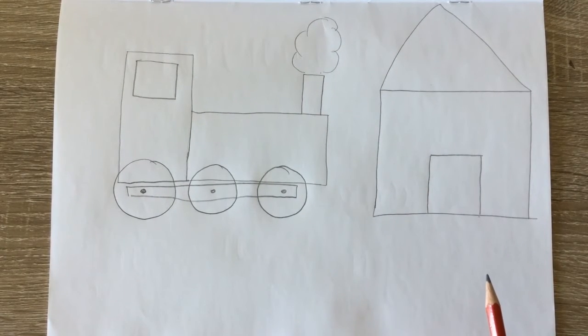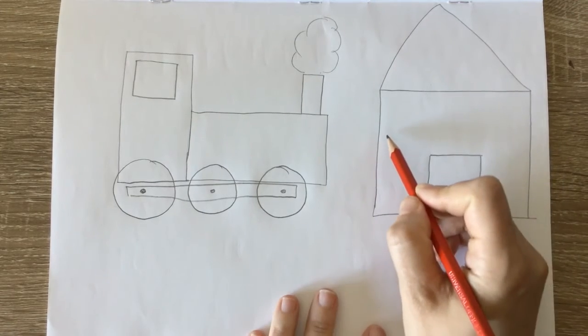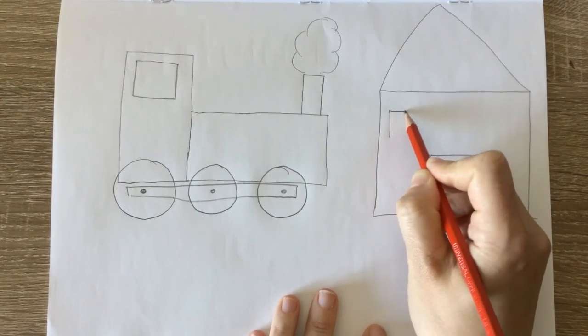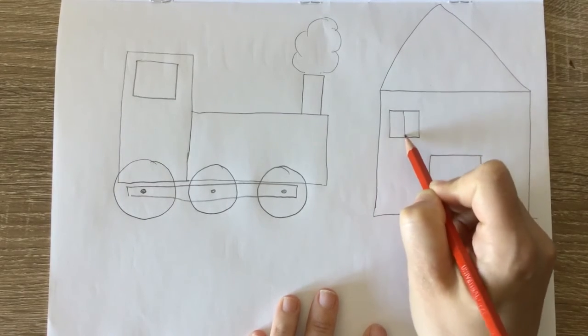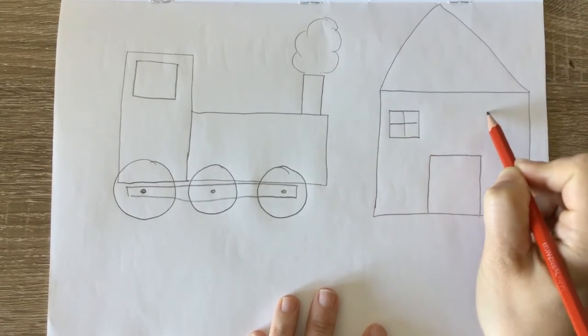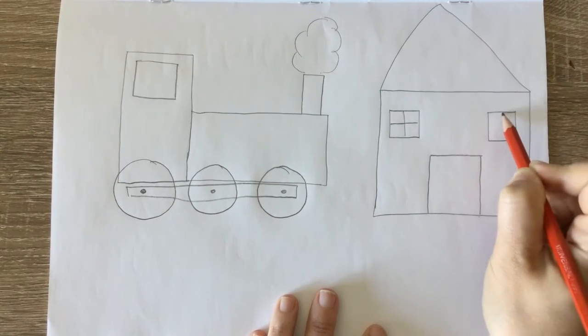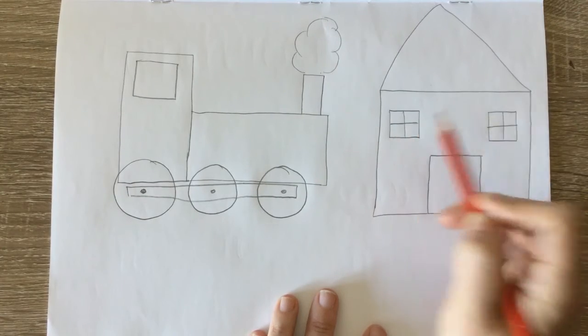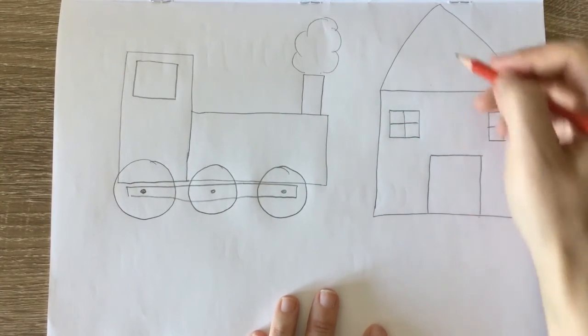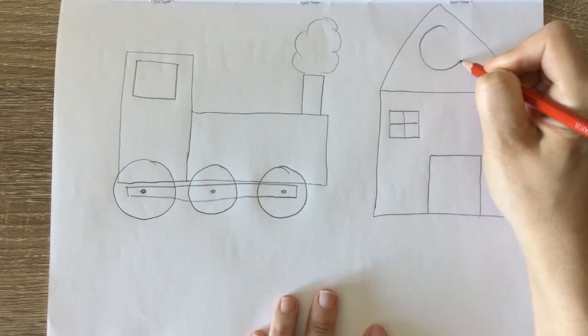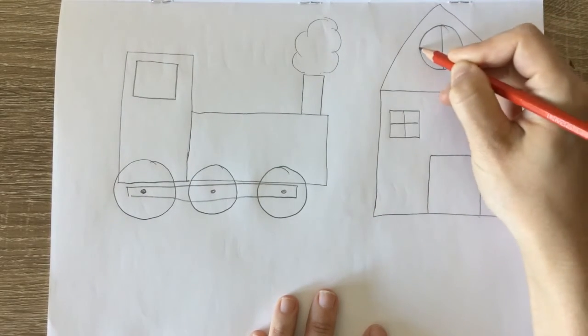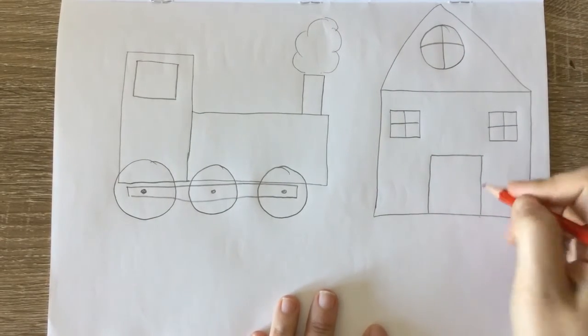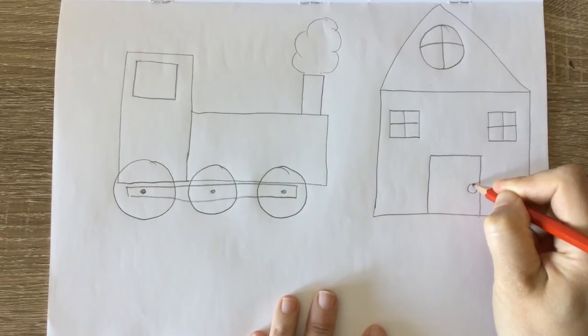And I'm going to draw the windows now. Now the windows can be whatever shape you want. You can have them circle, triangle, square, rectangle. I'm going to draw mine as squares the best I can. There we go. Oh look. I made one, two, three, four little squares in the window as well. Look at that. And I'm going to draw a circle window for my attic. And I'm going to draw a circle for my doorknob for my house.